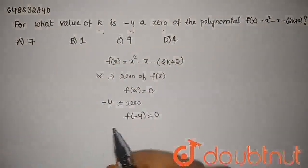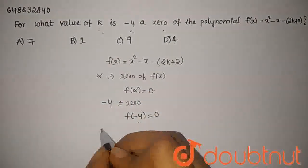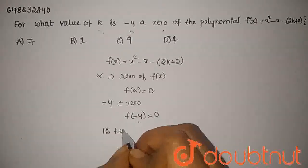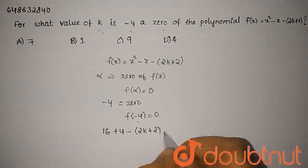Let's find out what value of k. We give here minus 4 as the x value. Minus 4 whole square is 16, and minus of minus 4 plus 4 minus 2k plus 2 equals zero.